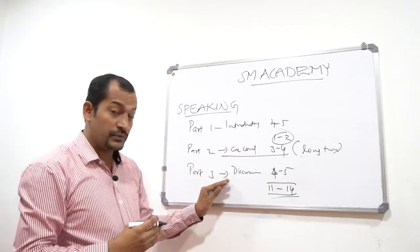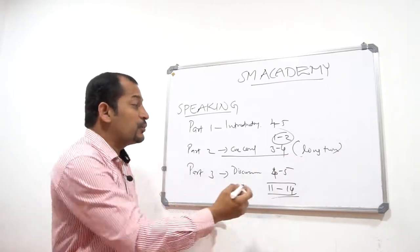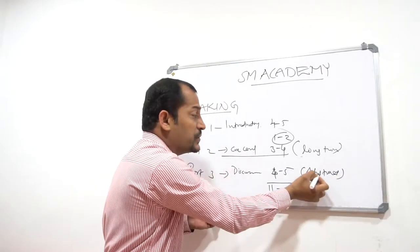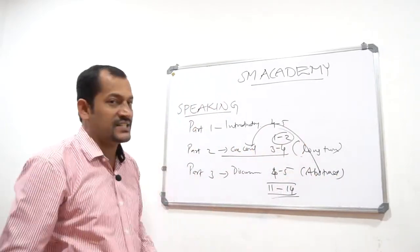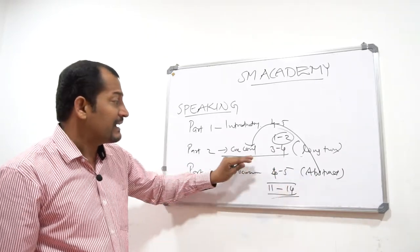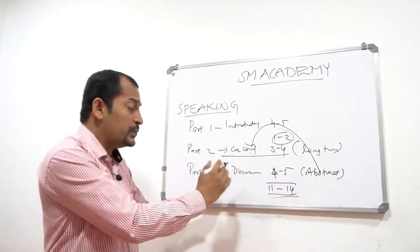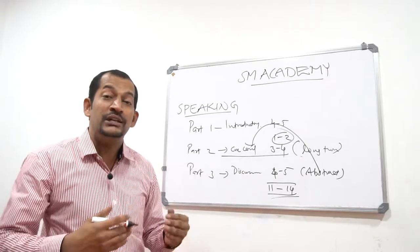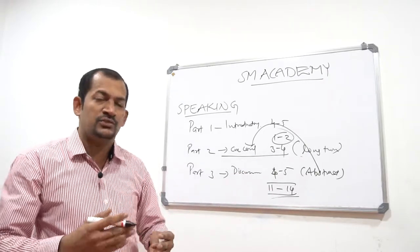The third one is Part 3, the discussion round. In the discussion, you will be getting abstract questions related to the second round, the cue card round. You will be getting certain questions related to the cue card round, and it's actually a question-answer session. The examiner asks you certain questions, and you need to answer these questions in 3 or 4 statements.